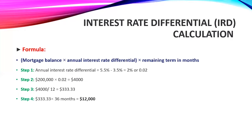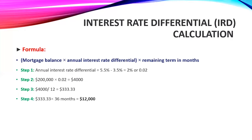We can see that the IRD of $12,000 is higher. So the lender would charge John $12,000 to break the mortgage, because it's higher than the three-month interest amount. Generally, when somebody has a fixed-term mortgage, the lender will charge either the three-month interest rate penalty or the interest rate differential, whichever is higher. In this case, $12,000 is higher, so the lender will go with $12,000.